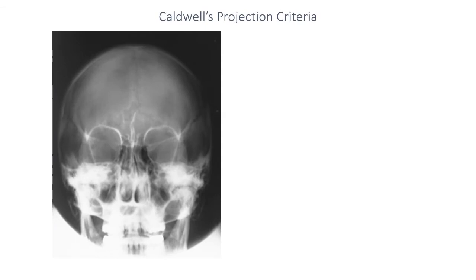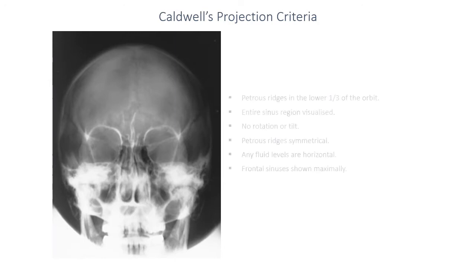When we perform a Caldwell's projection, our criteria are very similar to what we discussed in our skull radiography. The petrous ridges should be approximately in the lower third of the orbit, meaning the angulation of the anatomy is correctly done. The entire sinus region should be visualised well, with particular emphasis on the frontal sinuses, which should be shown maximally. There should be no rotation or tilt of the cranial vault, as evidenced by equidistance of bilateral structures from the edge of the cranial vault and midline structures shown in the midline. Checking that the patient's orbits and petrous ridges are approximately symmetrical is often the best way to confirm good positioning.